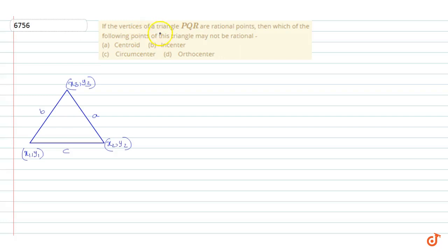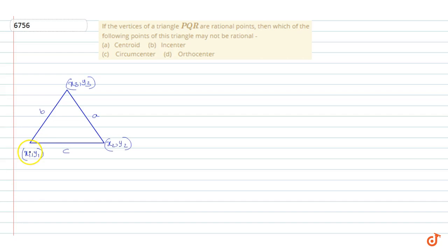In this question, if the vertices of a triangle PQR are rational points, then which of the following points of this triangle may not be rational? We know that if the vertices of a triangle ABC are given, we can examine each special point.